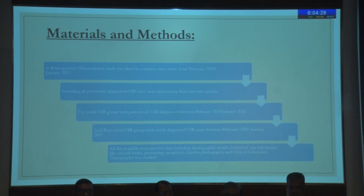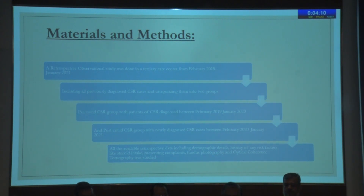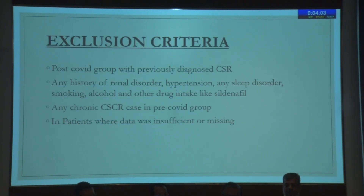All previously diagnosed CSCR cases were included and categorized into two groups: a pre-COVID CSR group with patients diagnosed between February 2019 to January 2020, and a post-COVID CSR group with newly diagnosed CSR cases between February 2020 to January 2021. Retrospective data included demographic details, history of risk factors such as steroid intake, presenting complaints, fundus photography, and OCT. In the post-COVID group, previously diagnosed CSR cases were excluded.